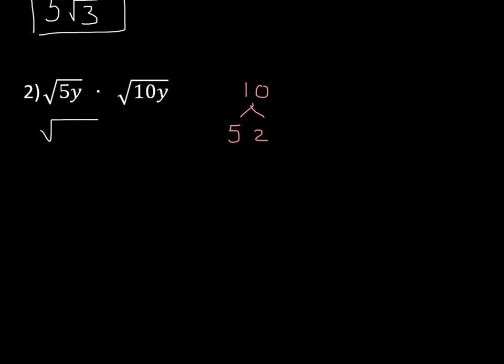So the first radical, I'm going to have 5y. The second one, I'm going to have 5 times 2 times y.